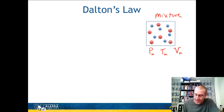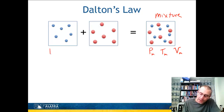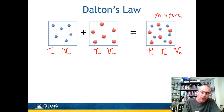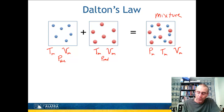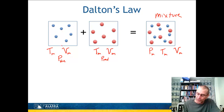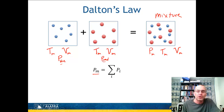Dalton's Law is the idea of additive pressures. We keep the temperature and the volume of the mixture the same. We take just the blue molecules and put them into one bin, and just the red molecules into the other bin, so now they're pure components. We determine their properties and find a particular pressure — the pressure of the blue and the pressure of the red. Those pressures are going to be smaller because temperature and volume remain constant but we have far fewer molecules. Dalton's Law says those partial pressures must sum to the total pressure: P_M equals the summation of all partial pressures.